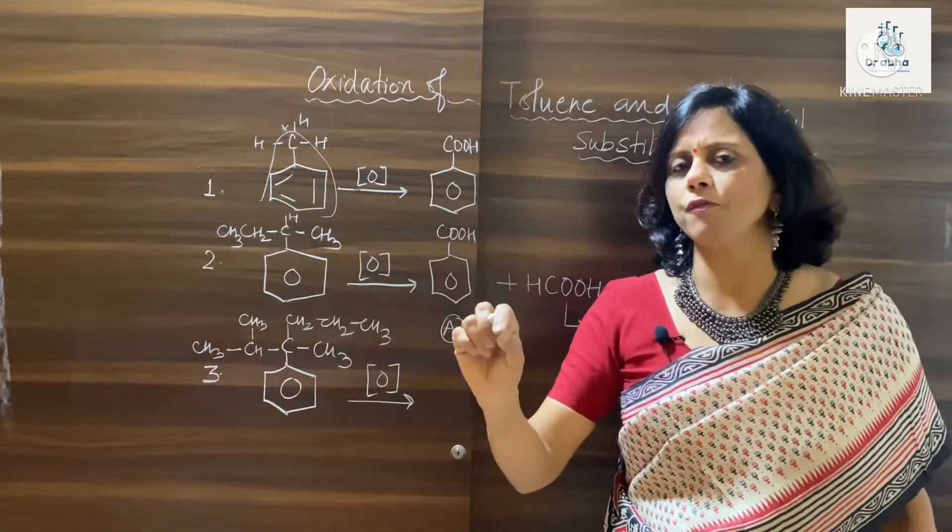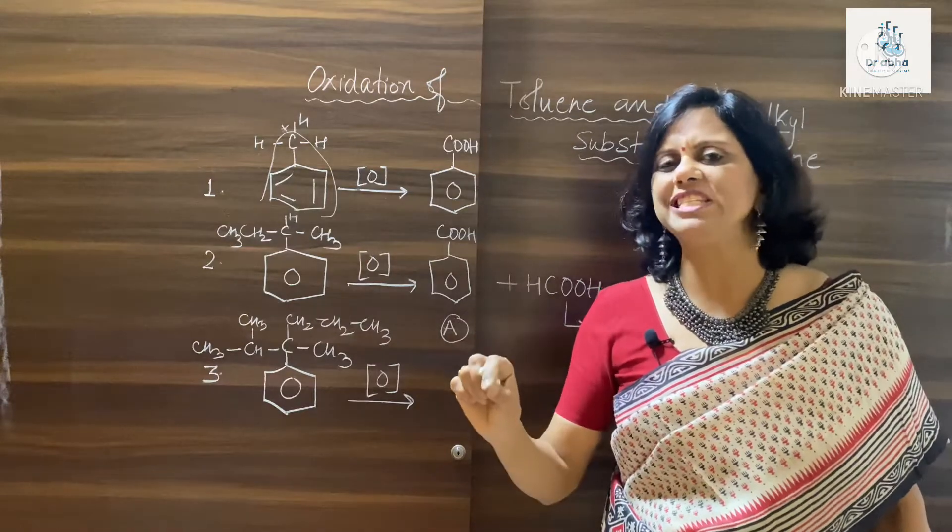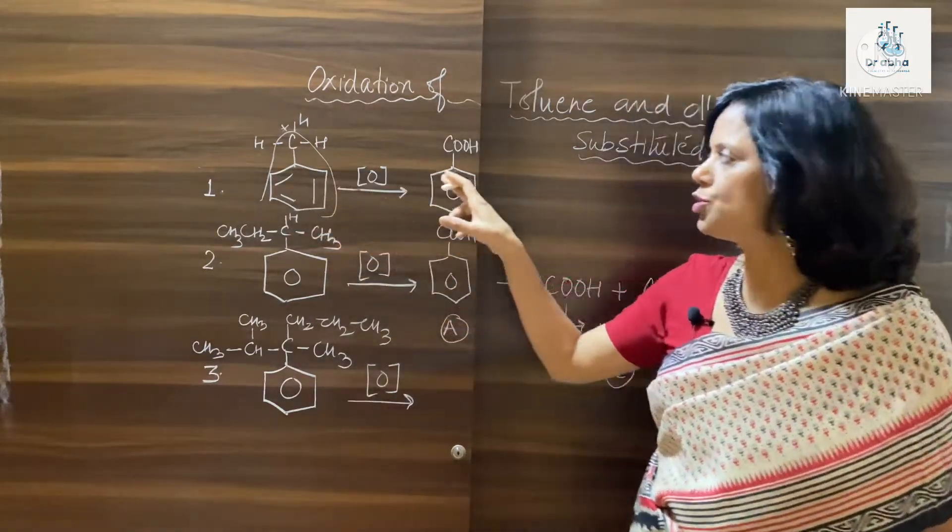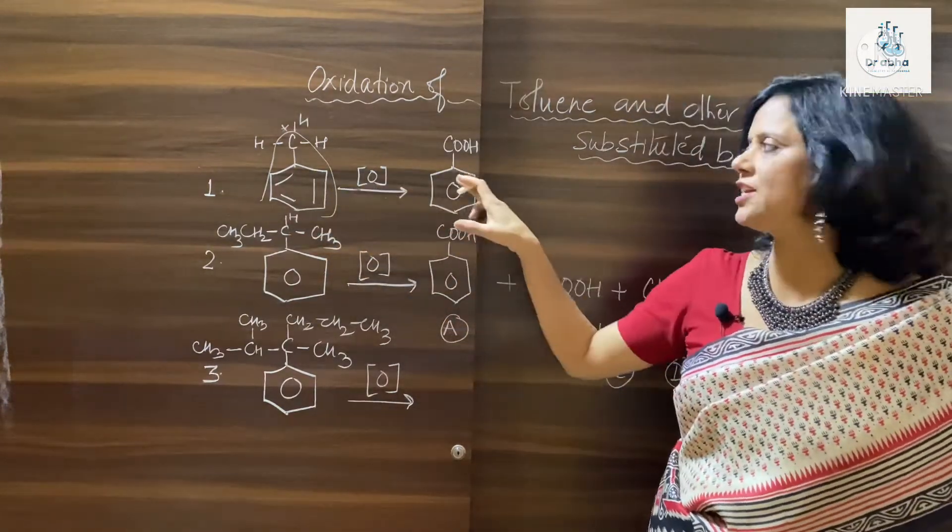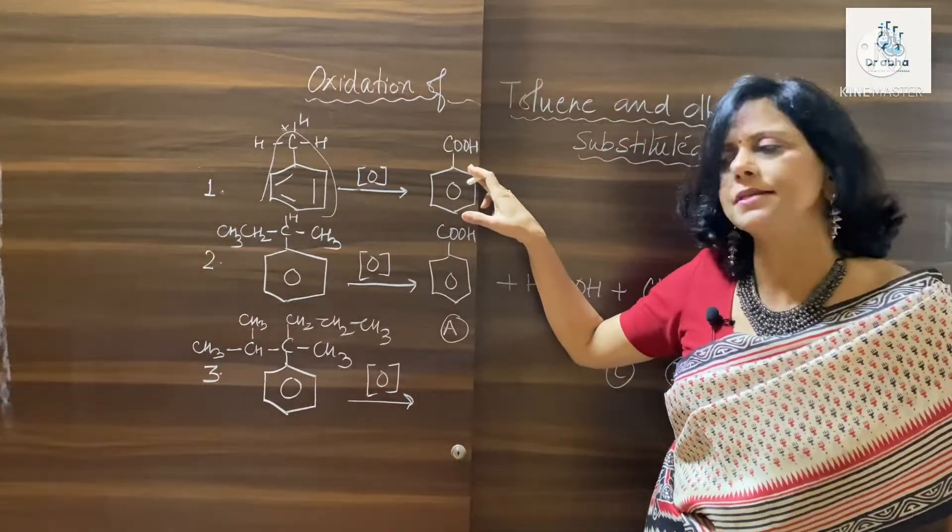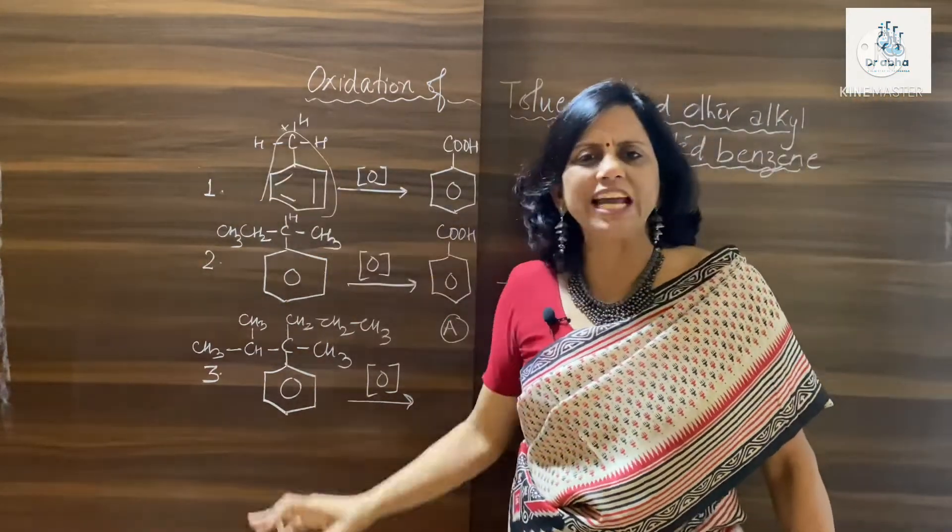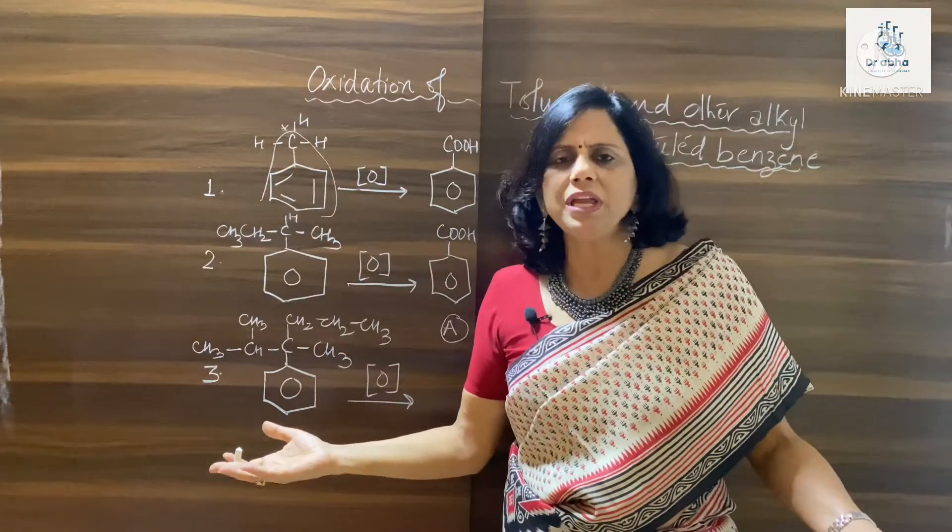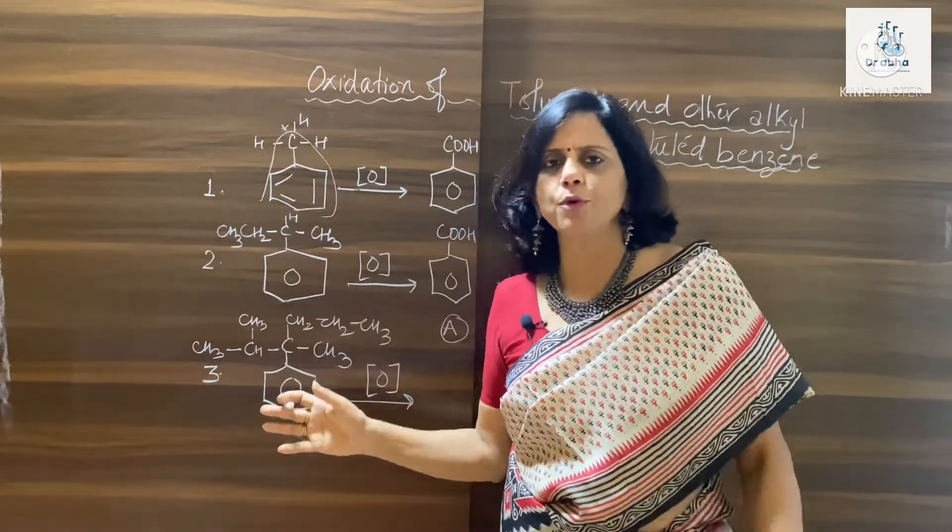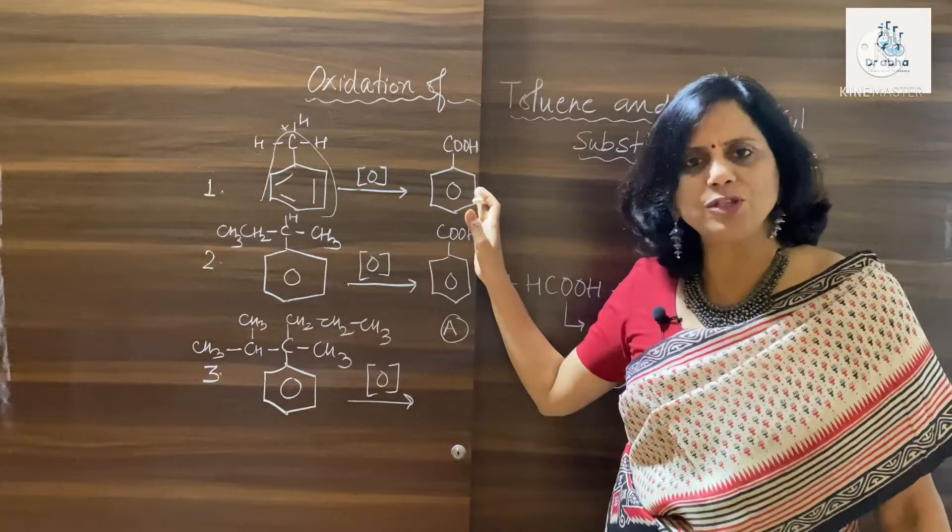So if the process of oxidation of alkylated benzene is taking place, we should be getting, for such a case, we should be getting benzoic acid. Now what is happening? Since we have on the other side only H, we will not get any other byproducts here and we are only getting benzoic acid.